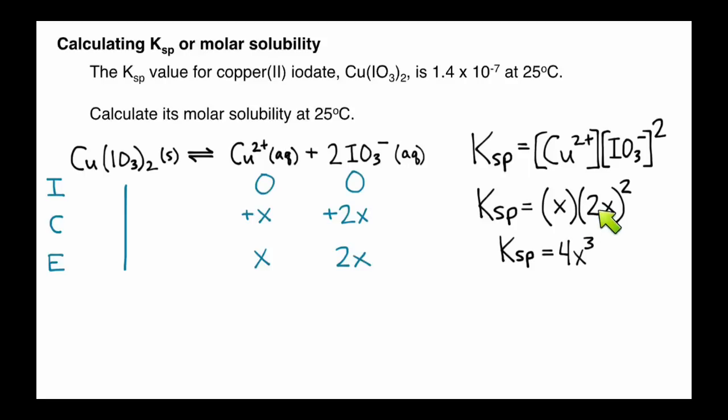Whenever you multiply 2X, that whole thing squared, the 2 squared gives you 4, and the X squared gives you X squared. Multiply that by X, and we get 4X cubed equals Ksp.